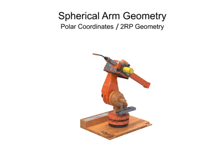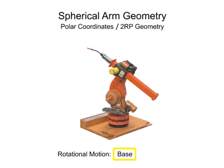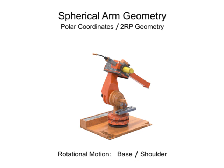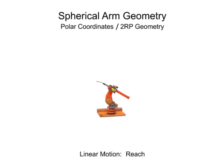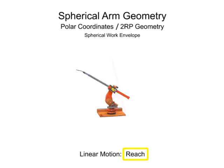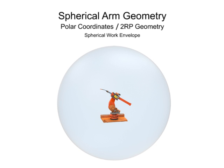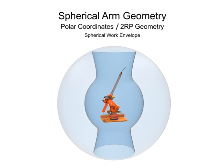Robotic arms with spherical geometry have rotational movement in two directions: rotational movement at the base and rotational movement at the shoulder. Spherical arm geometry robots also have linear motion in one direction, typically the reach of the arm. The work envelope is mostly spherical at the outer reach, but is limited by the linear reach of the arm and the rotation of the shoulder joint. The shape of the robot's inner work envelope is almost conical and does not become a sphere until the arm extends.